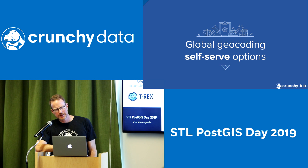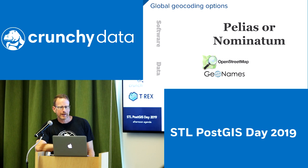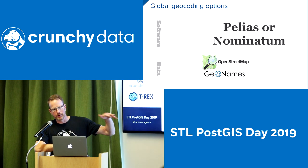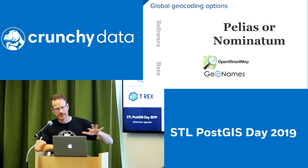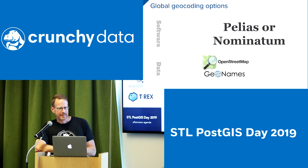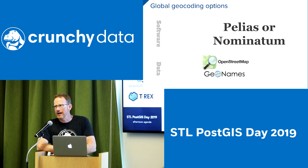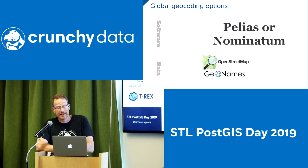Maybe you need to self-serve. For global geocoding, you need data that's complete, current, consistent, and multilingual. There are really a couple of software options: Pelias or Nominatim, sitting on top of OpenStreetMap, usually using GeoNames to provide the hierarchical layer — from country to sub-jurisdiction before getting down to street level. They can be quite hard to set up; there are consultancies who will help. The main limitation is not knowing for your area of interest just how complete the underlying data is.